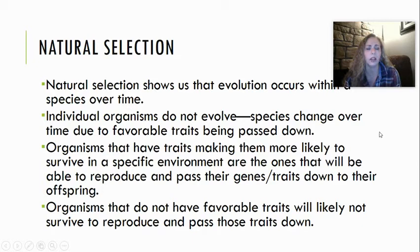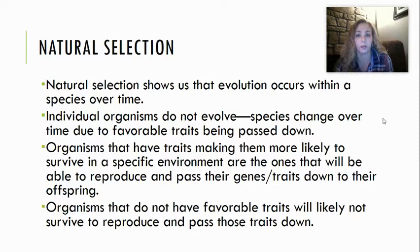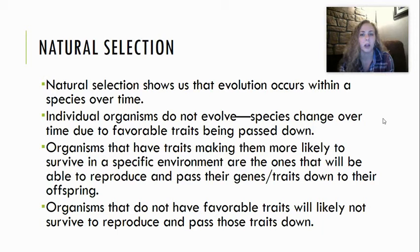First things about natural selection: natural selection shows us that evolution occurs within a species over time. Those individual organisms don't evolve — please understand that. I'm not going to evolve, you are not going to evolve. Species are what evolve. Those species change over periods of time. This happens because the traits that are favorable in that specific environment are the ones that allow that species to survive and get passed down. Therefore they become more common, and over long periods of time and lots of generations, we see a major change.